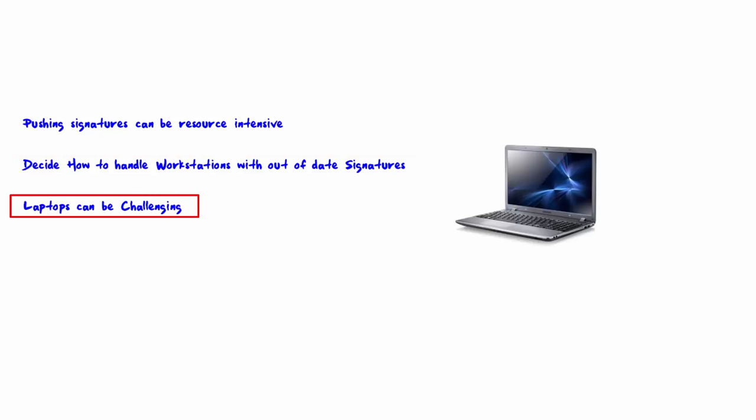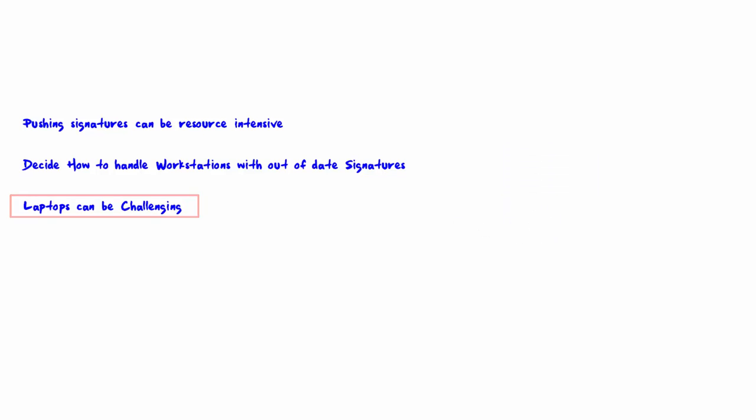Laptops can be challenging. Laptops used by road warriors present more of a challenge to keep protected. For example, the laptop may not even be on the network at the time when the latest signatures are pushed. That is the end of this lecture — thank you very much for watching.